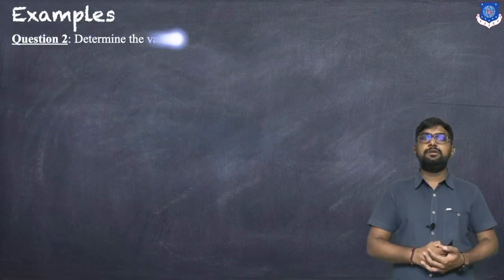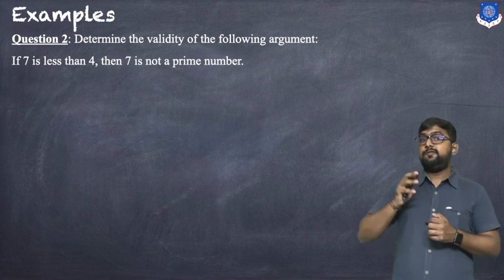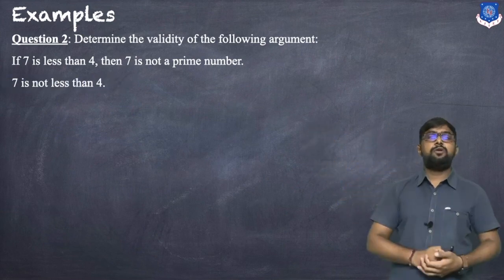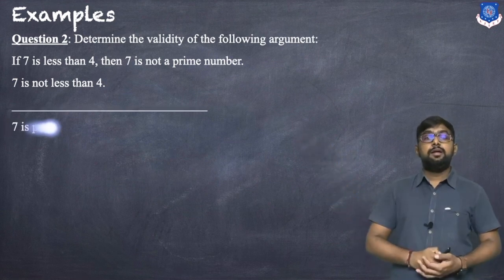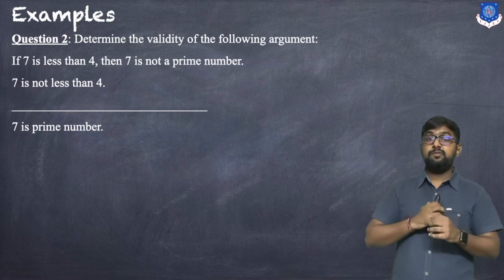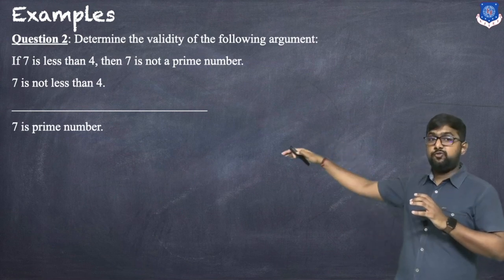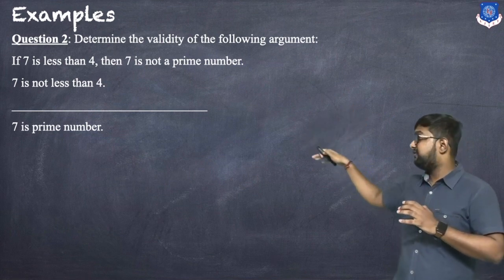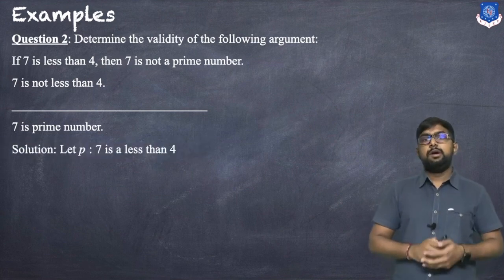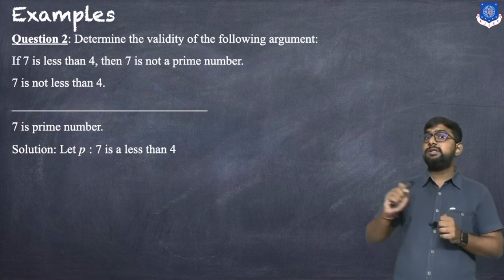Let us discuss the second example: determine the validity of the argument — 'If 7 is less than 4, then 7 is not a prime number; 7 is not less than 4; therefore, 7 is a prime number.' The argument is given in words, so we first convert it to symbolic form. Statements before the line are premises; after the line is the conclusion.